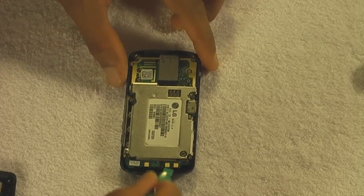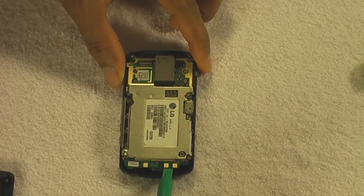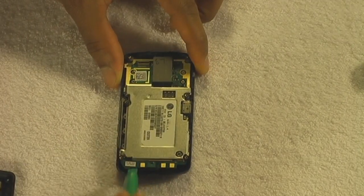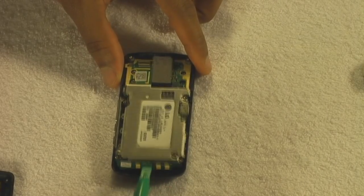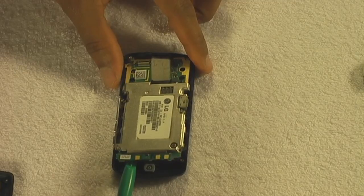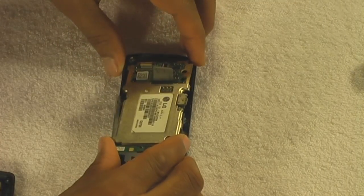Now let's take out the motherboard. Same thing. Use that plastic pry tool and just pop it out. Gently, of course. There it goes. Now you can remove that entire unit and set it to the side.